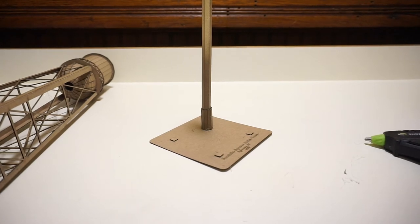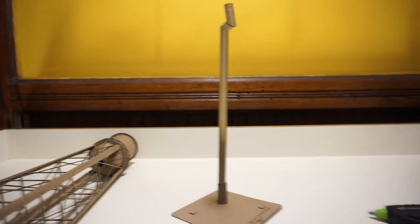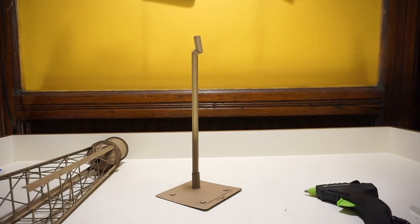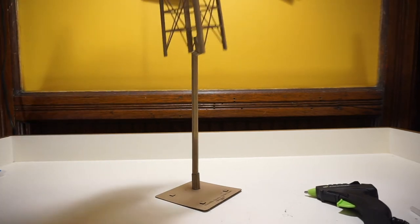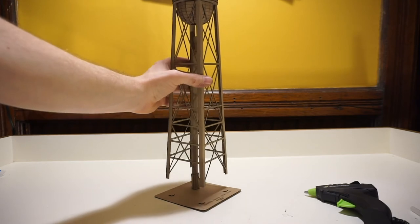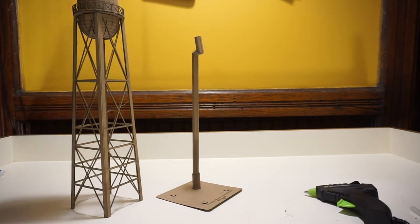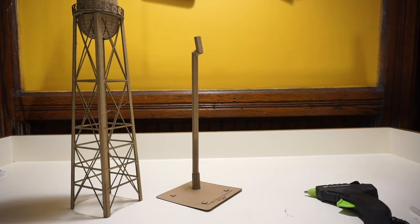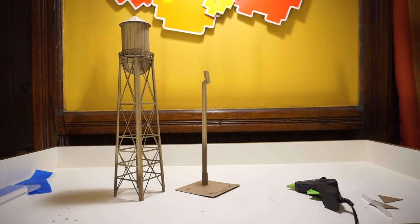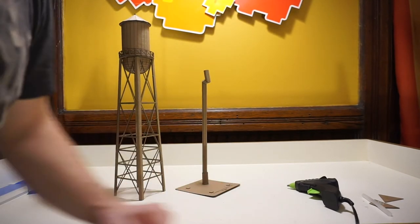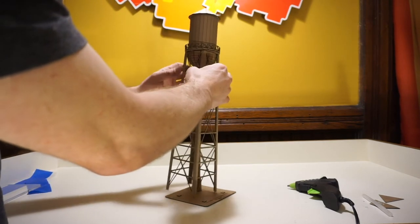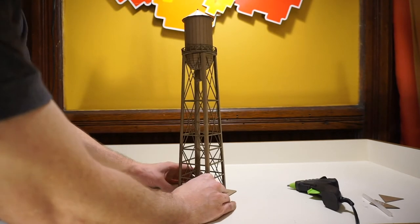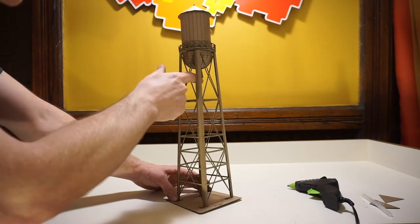And then what we're going to do, we're going to tilt up. Now we have those two pieces that will basically come together, and that pipe should slip right inside of the bottom of the tank, like so.